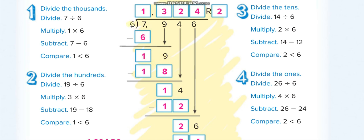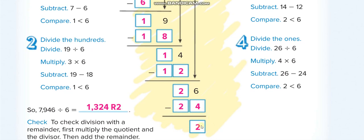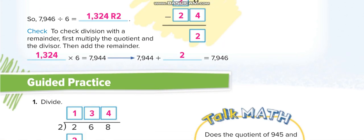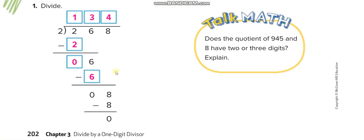Bring the next number down, 4 becomes 14. 6 times 4 is 24, and the remainder is 2. So the answer is 1324 remainder 2. OK, here: 2 times 1 is 2. 2 minus 2 is 0. Bring the next number down, 6. 2 times 3 is 6. 6 minus 6 is 0. Bring the next number down.